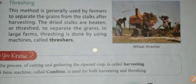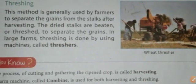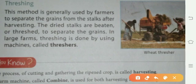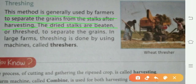Next, we have threshing. This method is generally used by farmers to separate grains from the stalk after harvesting. The dried stalks are beaten to separate the grains. In large farms, threshing is done using a machine called a thresher.